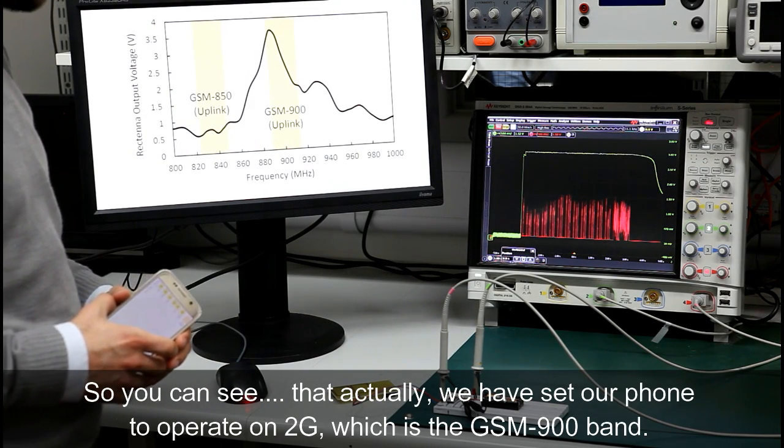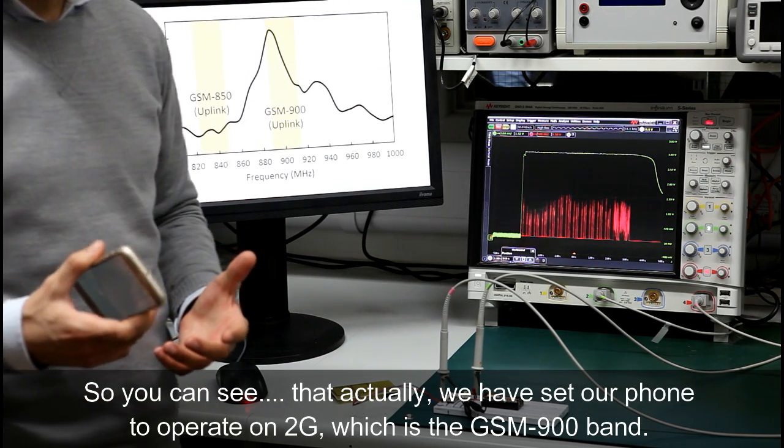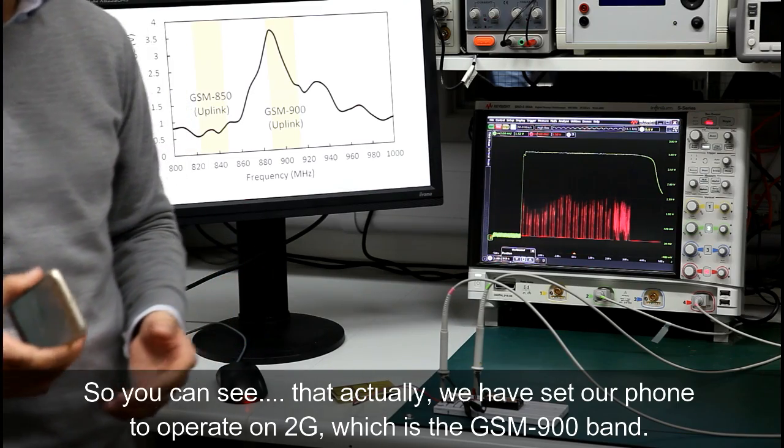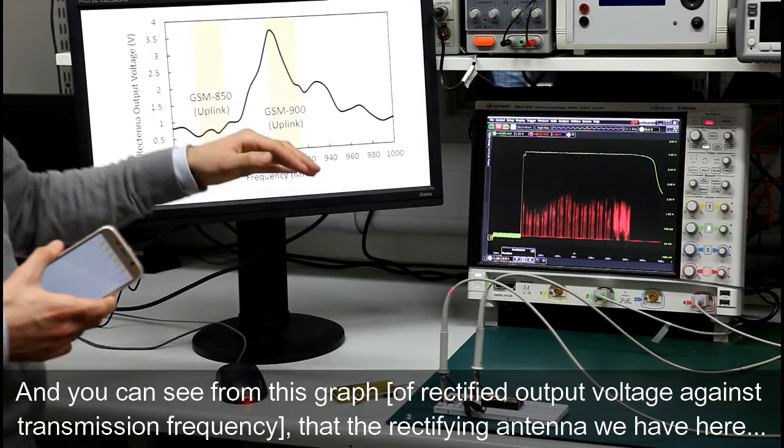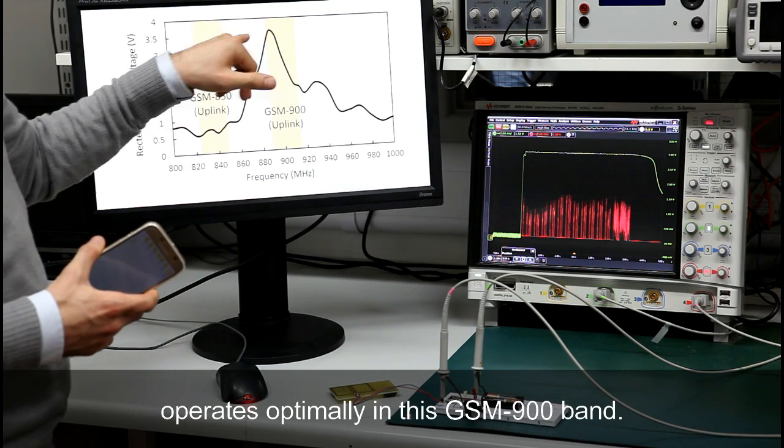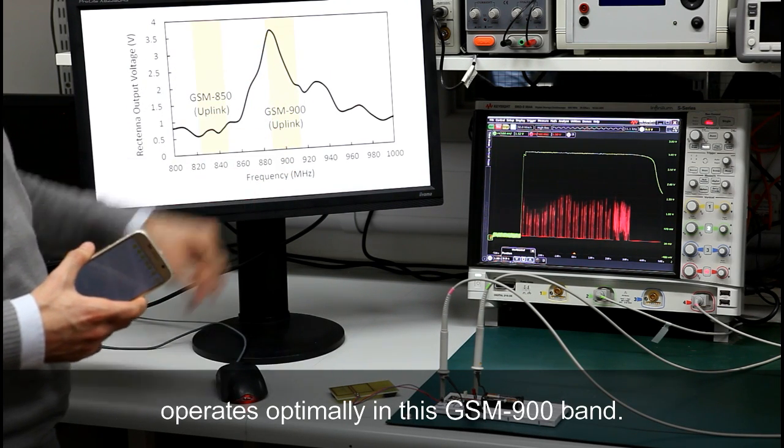So you can see that actually we have tuned our phone to operate at 2G, which is the GSM 900 band. And you can see from this graph that the rectifier antenna we have here is operated optimally at this band GSM 900.